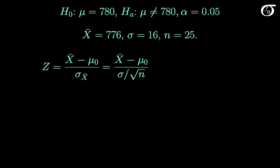Let's summarize the information we have to this point. We're testing the null hypothesis that the true mean is 780 grams against a two-sided alternative at an alpha level of 0.05. The observed value of the sample mean is 776 grams. The population standard deviation sigma is known to be 16, and we had a sample size of 25.